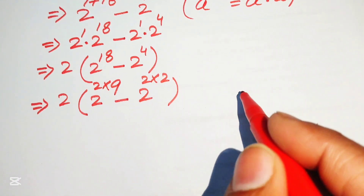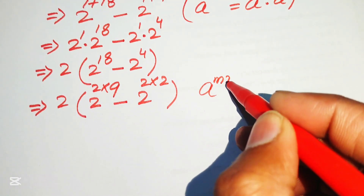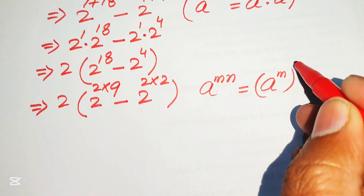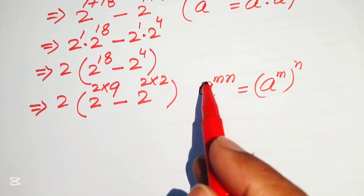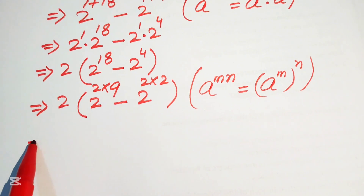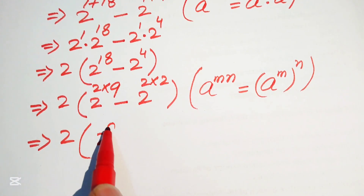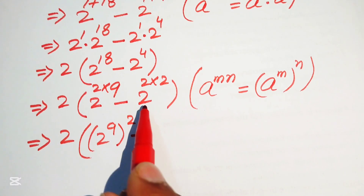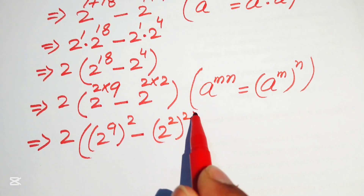Here we use another exponential law: a to the power of m times n equals a to the power of m, to the power of n. According to this law, we rewrite the exponents in the form: 2 times 2 to the power of 9, whole squared, minus 2 squared, whole squared.